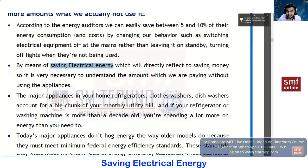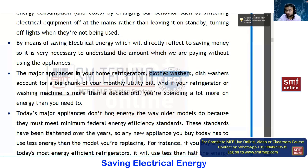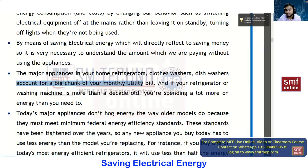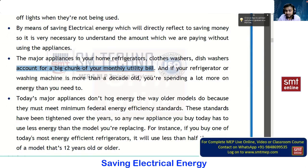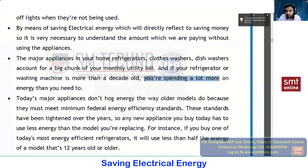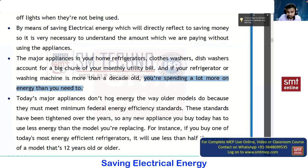The major heavy-load appliances in the home include refrigerators, which we use 24/7, cloth washers, dishwashers, and water heaters. These equipments account for almost 60 percent of your monthly electricity bill. If your refrigerator, washing machine, or any electronic device is a decade old — 10 years old — you are spending a lot more on energy than you need to, because those devices are not BEE-certified and will consume more electrical energy.